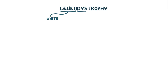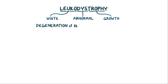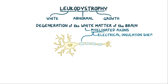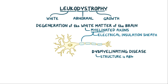Leukodystrophy can be broken down. Leuko means white, dys means abnormal, and trof means growth. So leukodystrophy means degeneration of the white matter of the brain, and that's part of the cerebral cortex that's filled with myelinated axons. Myelin refers to the electrical insulation sheath around axons, which allows neurons to quickly send electrical impulses to one another. Leukodystrophy is a dysmyelinating disease, meaning the structure of the myelin is abnormal, and it's usually due to a genetic mutation.